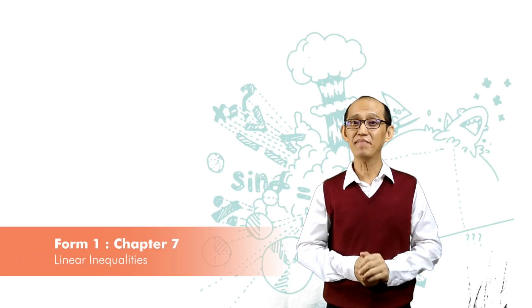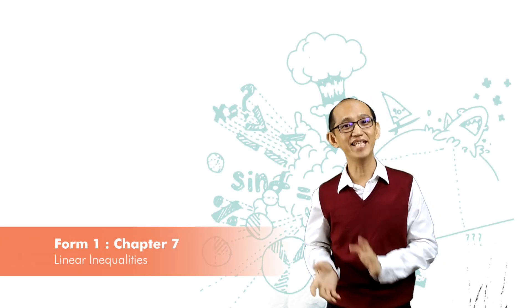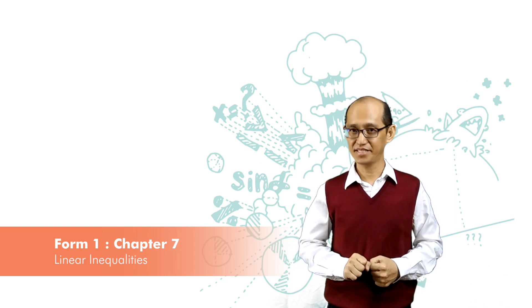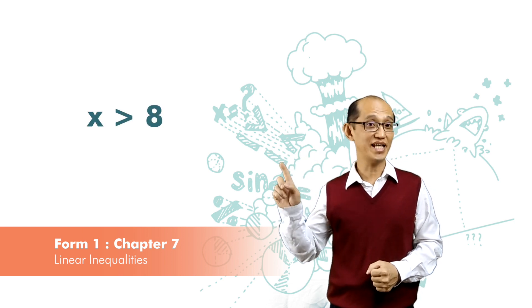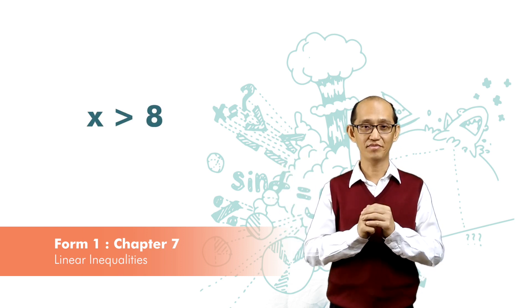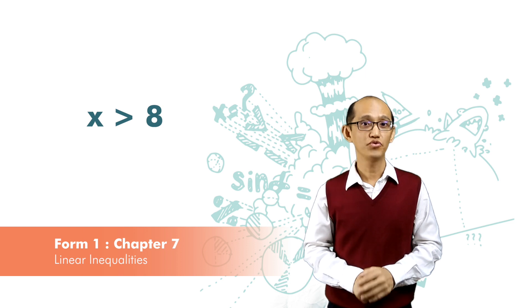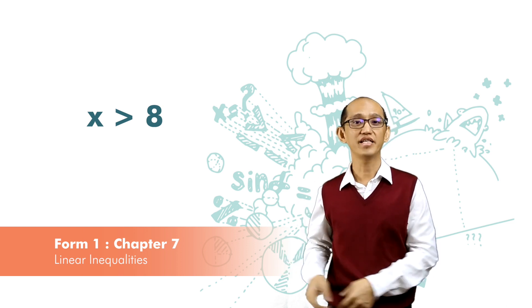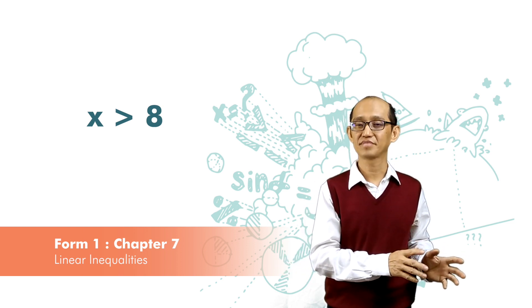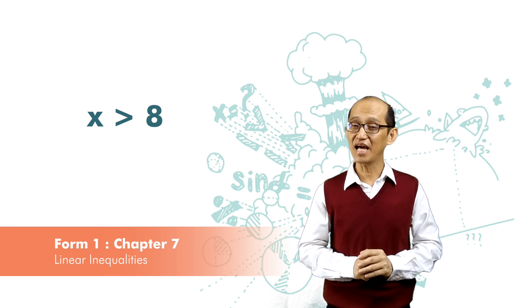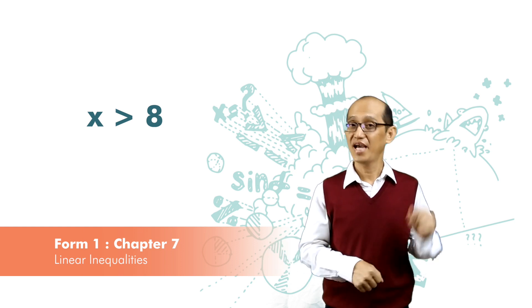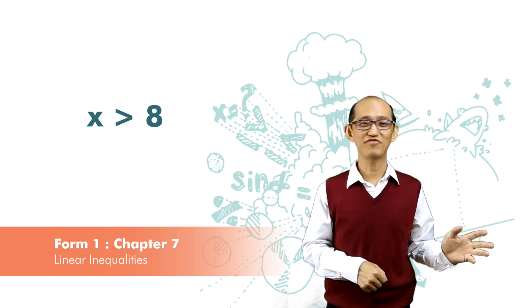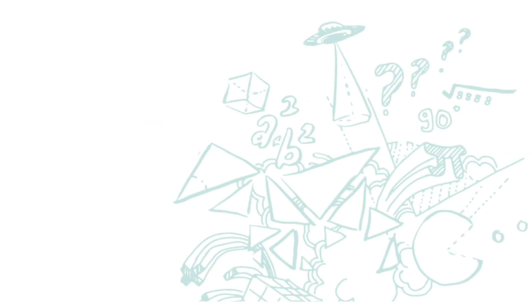We have learned the mathematical notation of greater than and less than. Next, let's see for example when x is greater than 8: what happens when we add 3 to both the left-hand side and the right-hand side, and what happens when we multiply both sides by negative 5.